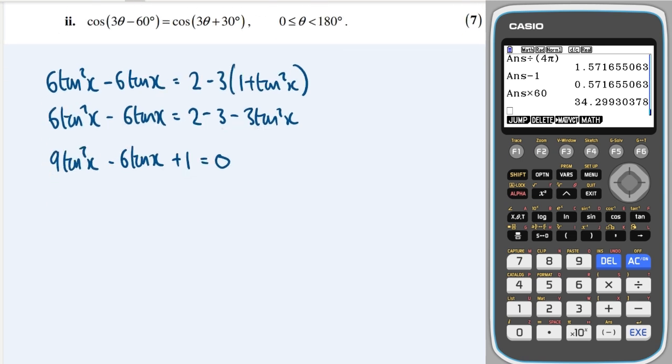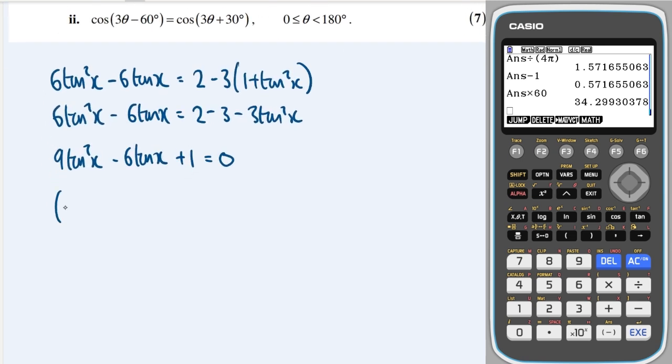Okay, let's factorize that and that's quite a nice neat factorization. It will be 3tanx minus 1 all squared. Lovely.